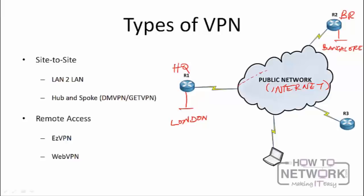Because you own both devices at headquarters and at Bangalore, you don't need to pay any extra money to your ISP — you use the internet service you already have and build your tunnel over it. Once the VPN forms, all users behind the specified networks can communicate across the private tunnel. That's why it's called a site-to-site VPN — you're building a private network between one site and another.